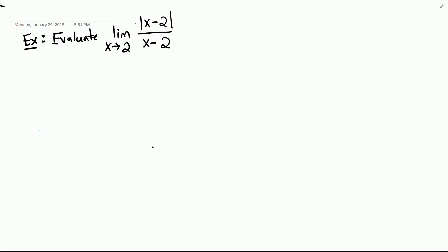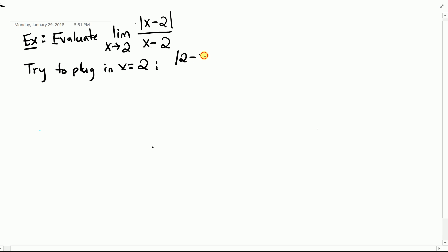The first step in evaluating a limit like this is you try to plug in x equals 2. So if we try to plug in x equals 2, what we get is the absolute value of 2 minus 2 on top, and on the bottom we get 2 minus 2. This simplifies to the absolute value of 0 on top, which is 0, and on the bottom we also have 0.